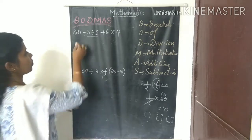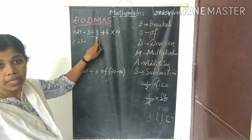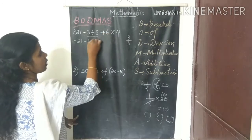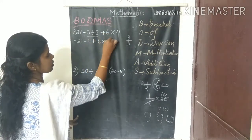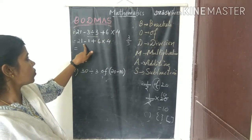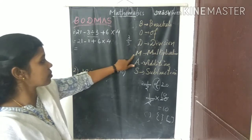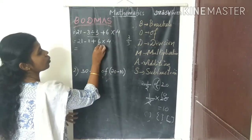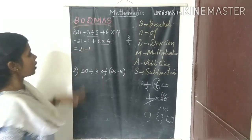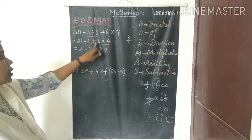We do the division first. What is 3 ÷ 3? That equals 1. So we write: 21 minus 1 plus 6 × 4. Division is done. Next, which operation comes first — multiplication? Yes, multiplication comes first. 6 × 4 equals 24.